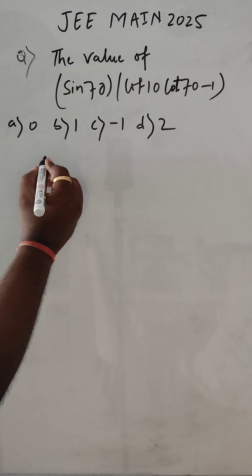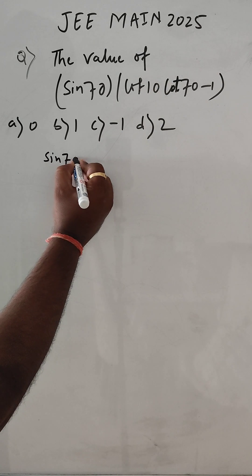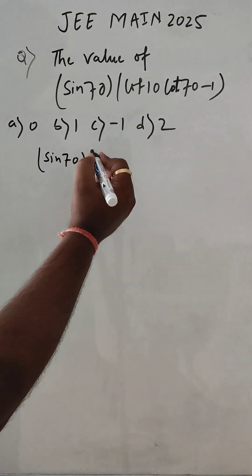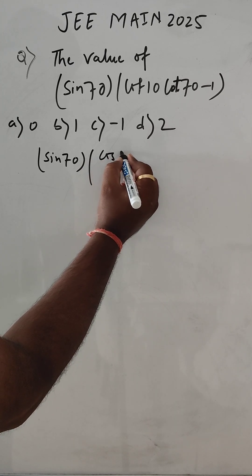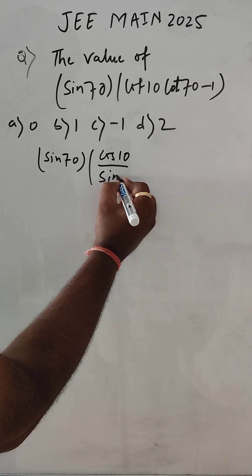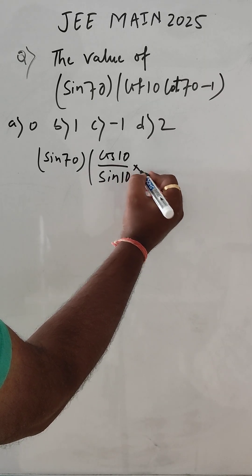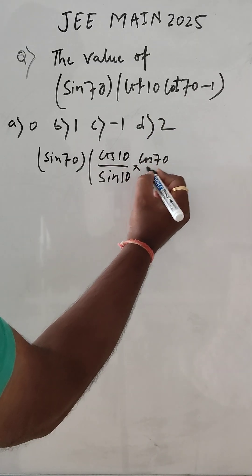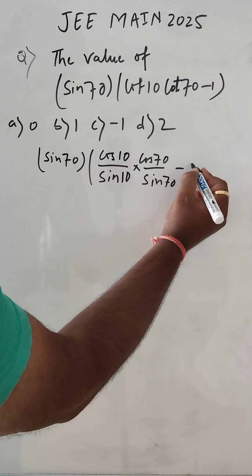Let us see which option is correct. So the question over here is sin 70. Now this cot cot we can write like this: cos 10 and here sin 10, into this one. This is also cos 70 and sin 70 minus 1.